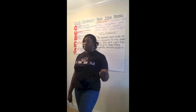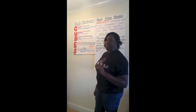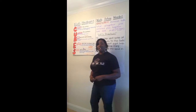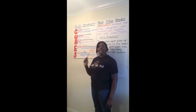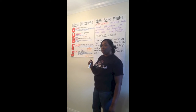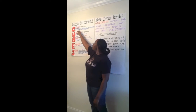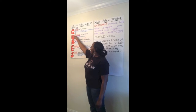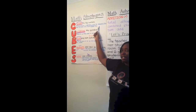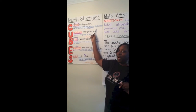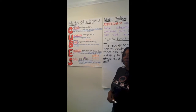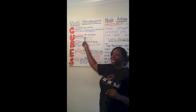This strategy is called CUBES. The C in CUBES means circle the key numbers. In every number problem or story problem, there are key numbers you're looking for. After you read your story problem, circle the key numbers. If the numbers are written in word form, write them in standard form — written out as a number — above the words after you've circled it.